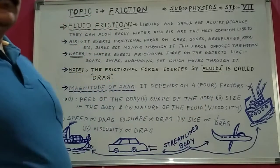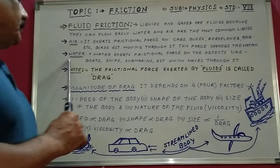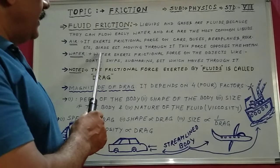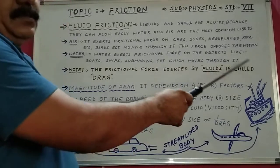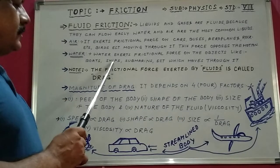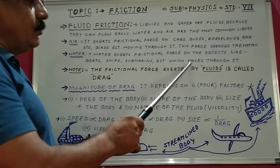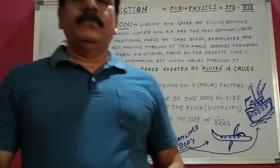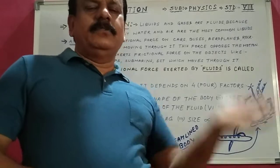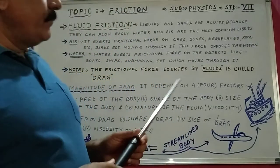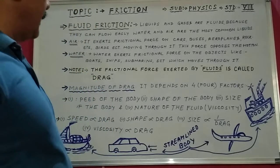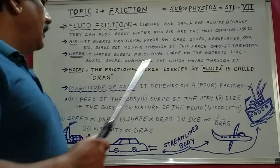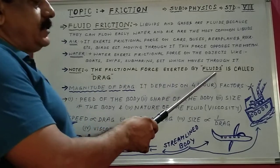Number two: water. Water also exerts pressure on objects moving in water. Water exerts frictional force on objects such as boats, motor boats, ships, and submarines which move through it. The frictional force exerted by water on these objects reduces their motion, and this is also known as fluid friction.